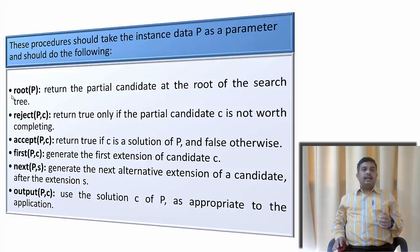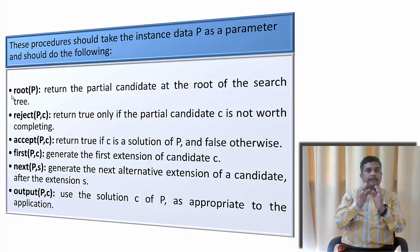When we are saying root, it is the initial partial candidate from where the tree of searching will be starting. And if we will say p reject p of c, when a partial candidate solution we are rejecting, it is not worth completing searching henceforth. Accept p, c means we are returning true if the solution c is leading one step at least to the solution. Otherwise it is not leading to the solution. This will return false.